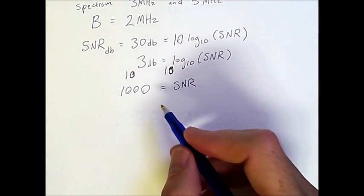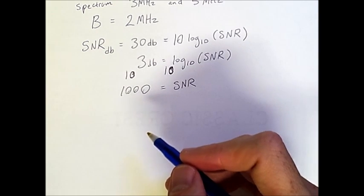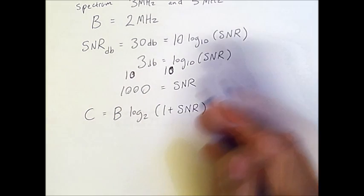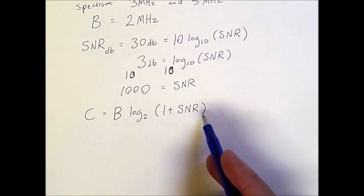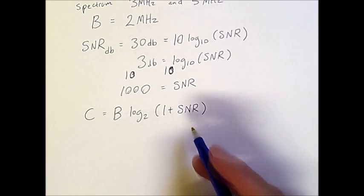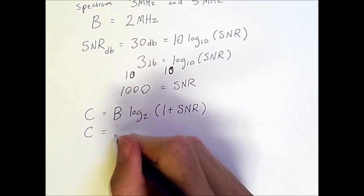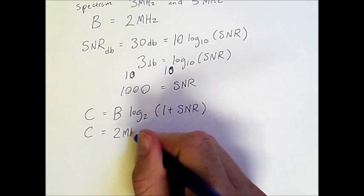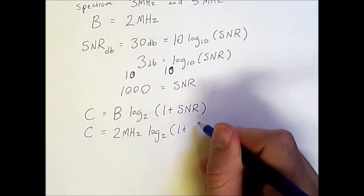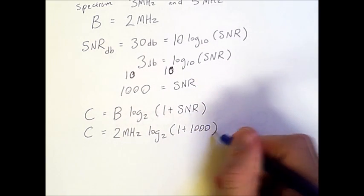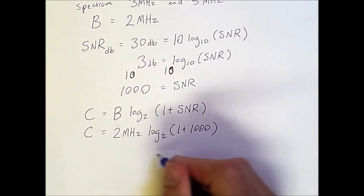Now, given this information, we want to determine the capacity of this channel, the theoretical maximum, as determined by Shannon's formula. Now, Shannon's formula says that C equals B times log base 2 of 1 plus SNR. So, we can plug in values here. We know that we want to find what C is. B is 2 megahertz, and we have log base 2 of 1 plus 1,000. So, we need to figure out what log base 2 of 1,001 is.